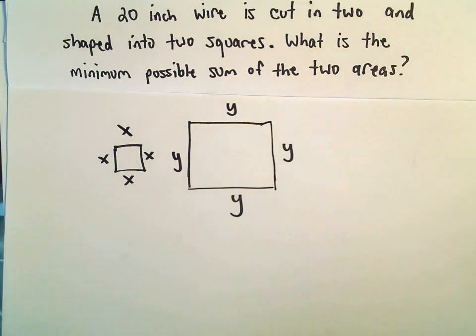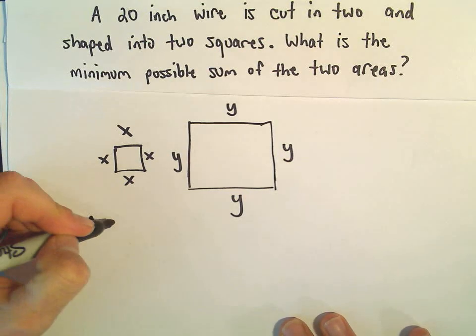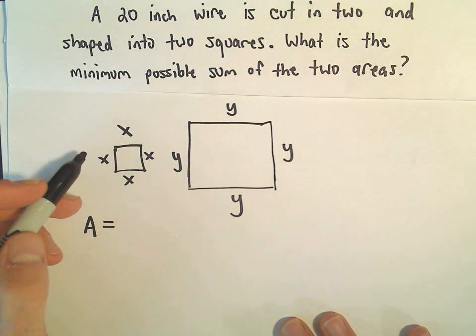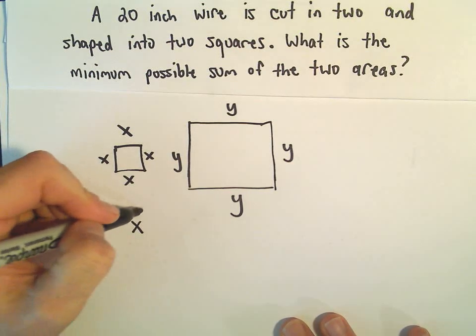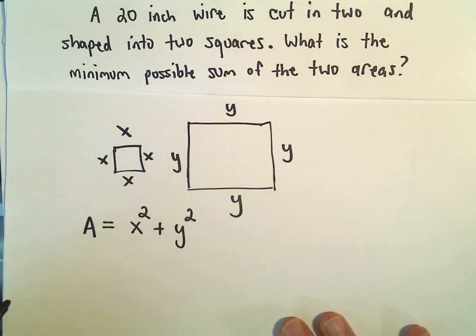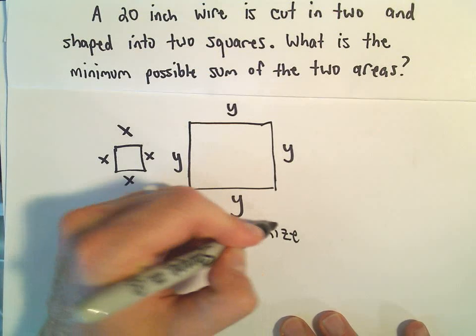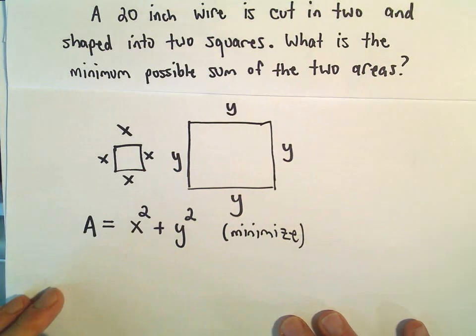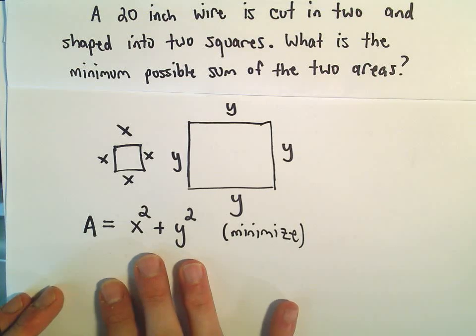This is what I want to find. So if you think about the area of these two squares, and again, that's what we want to minimize. We would just take x times x, so we would get x squared, and then we would take y times y, so we would get y squared. And again, this is the function that we want to minimize. So eventually, I'm going to have to take a derivative of this. But first, we want to just get it down to a single variable, either x or y.